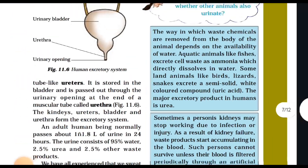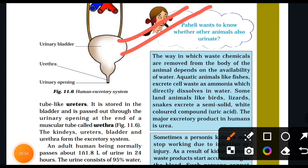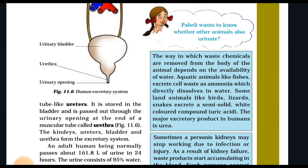We also want to know whether other animals urinate. The way waste chemicals are removed from the body of an animal depends on the availability of water. Aquatic animals like fish excrete waste as ammonia, which is directly dissolved in water. Land animals like birds, lizards, and snakes excrete semi-solid white uric acid. In humans, the excretory product is urea.